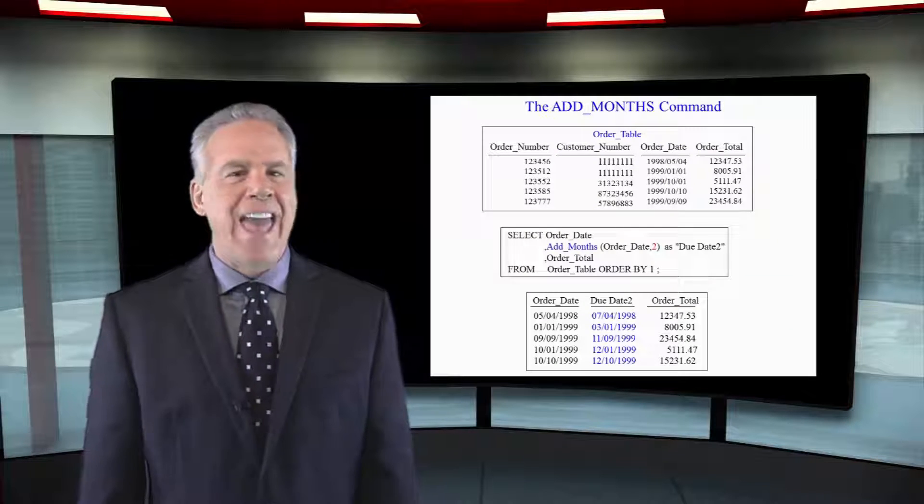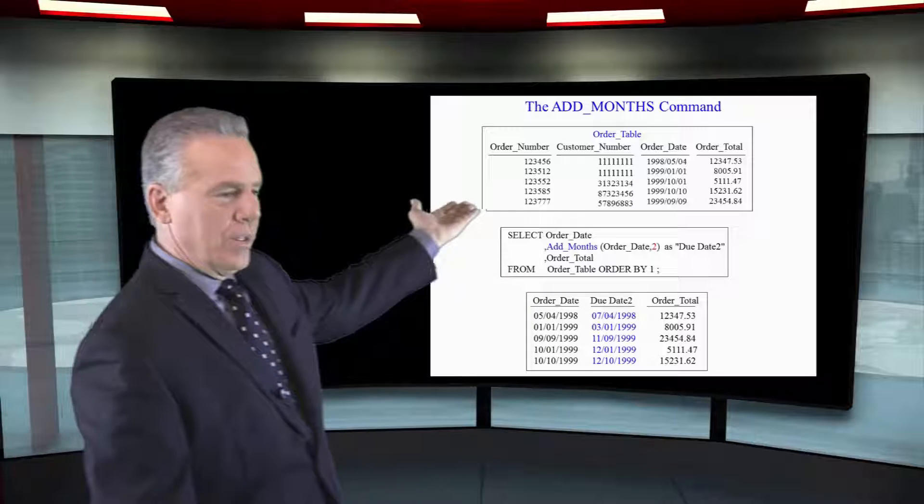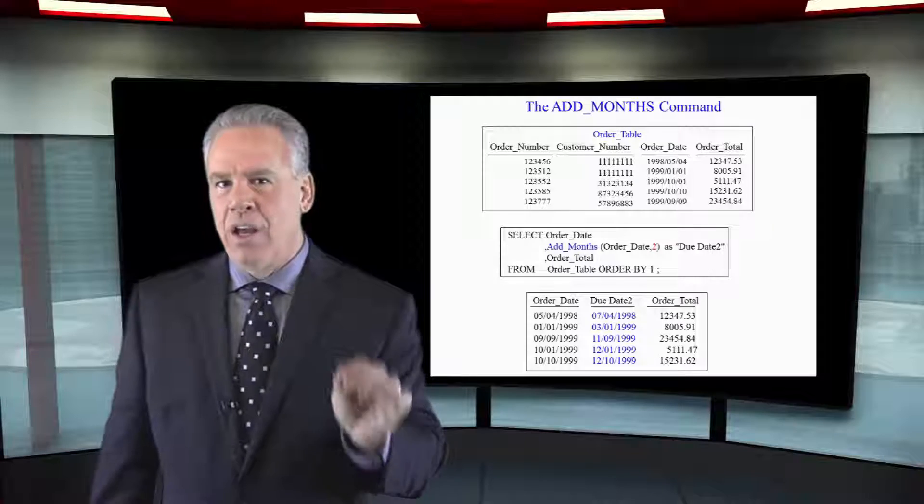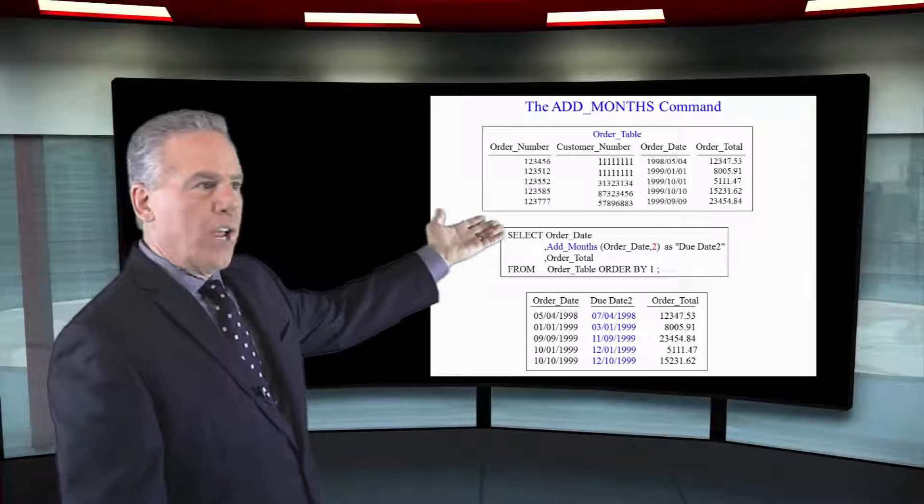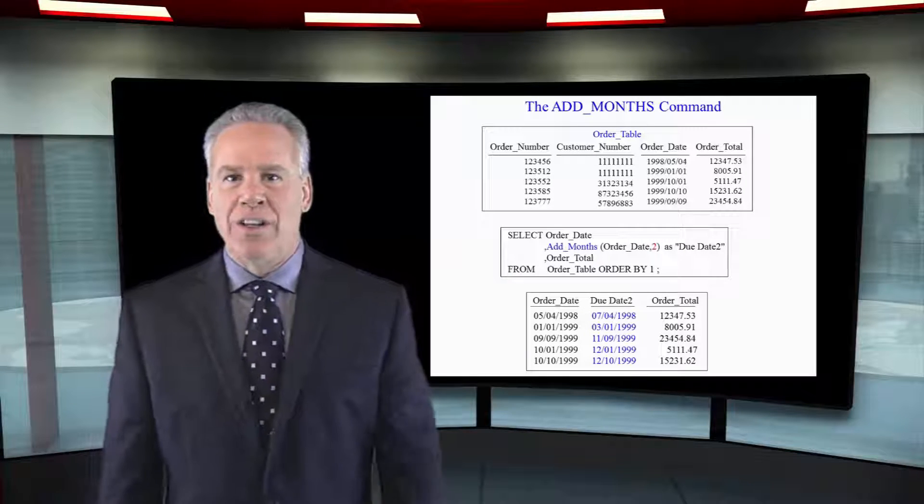This is the add months command. I'm talking about add underscore months. We want to select the order date. Then we want to add two months to that order date which is going to be their due date. So we use the add underscore months open paren, order date. How many months do you want to add to that? And we've chosen two.